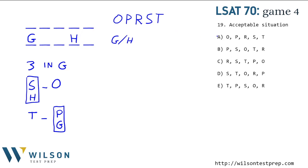With those conditions, let's answer the acceptable situation question. S is before O, so that rules out A, which has O before S. T is before P, and that rules out B. S is in room H so it can't be first — answer choice D has S first. P is in room G so it can't be fourth, which rules out C. So E is the choice that satisfies all of these conditions.